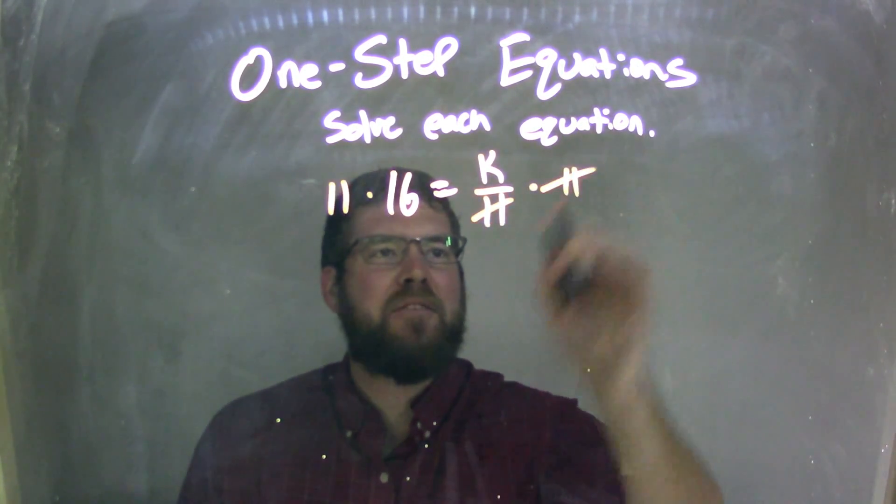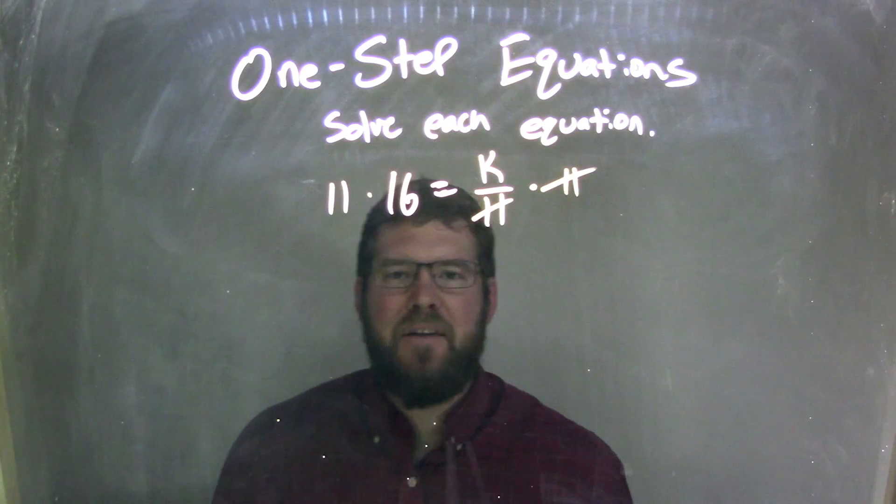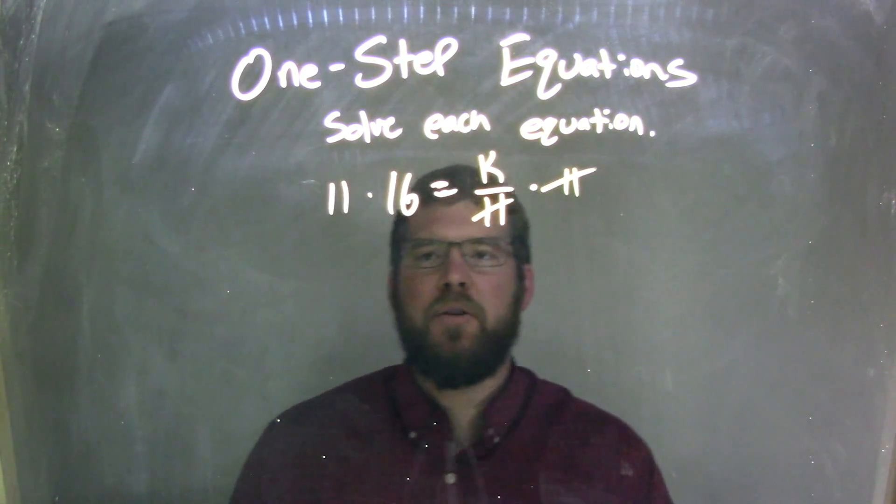What that does, here on the right, it cancels out the 11, but on the left, I have 11 times 16, so let's go multiply that.